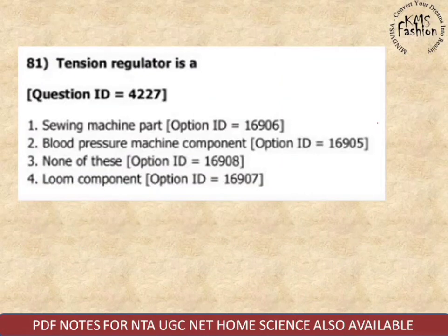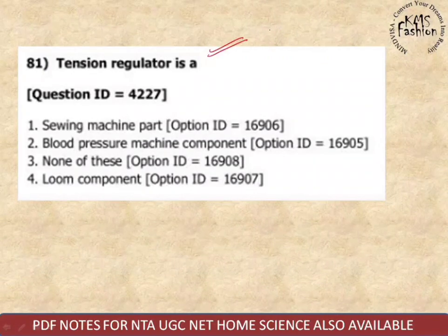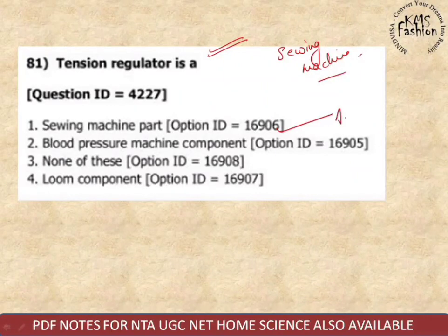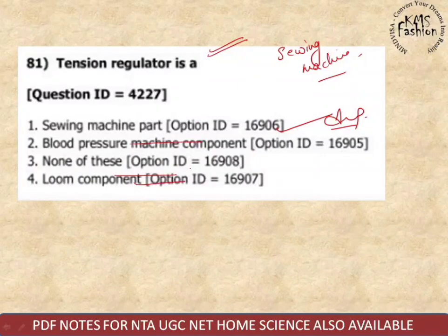Next question: a tension regulator — what is it? Tension regulator controls the tightness or tension. We are talking about a sewing machine. It is a part of a sewing machine — not a blood pressure machine component, not a loom component. So the correct option is sewing machine part.